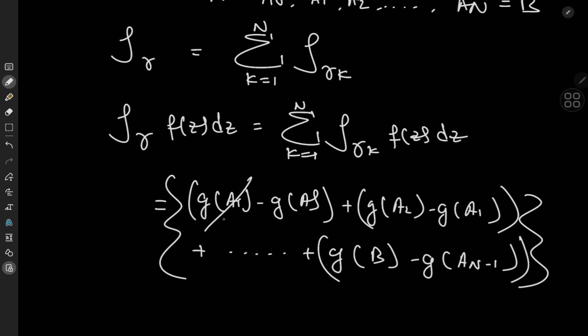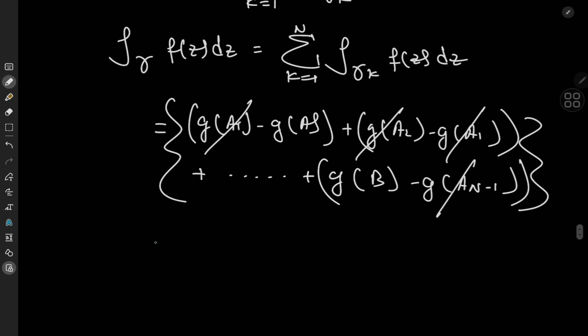We see some lovely cancellations: g(a₁) cancels, g(a₂) cancels similarly, and everything cancels until we're left with g(b) minus g(a).